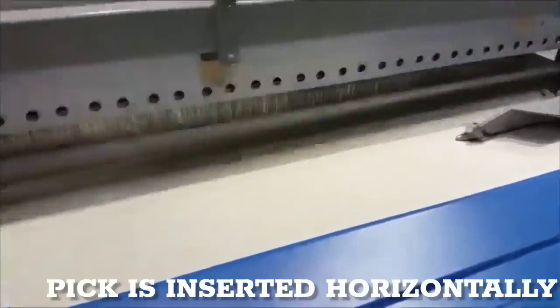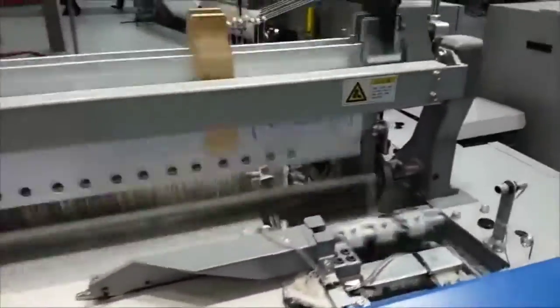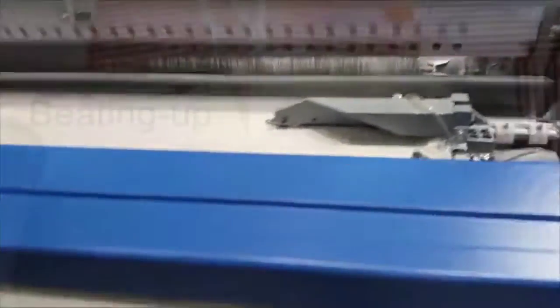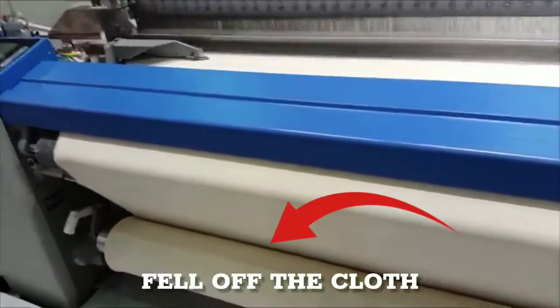In air jet looms, pick is inserted with the help of air pressure through the shed opened by the shedding mechanism, between the two layers of warp sheet.